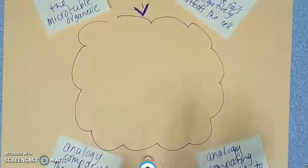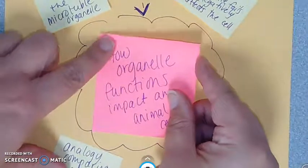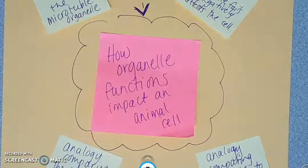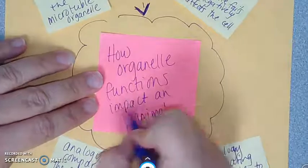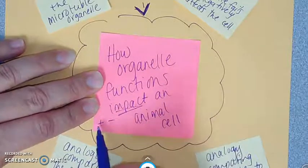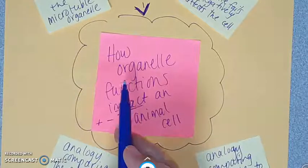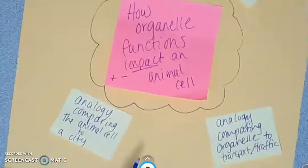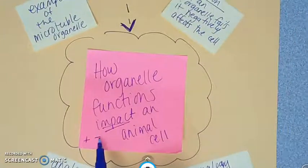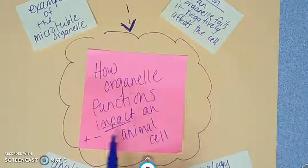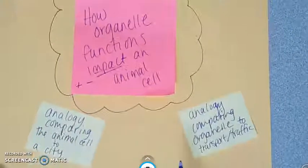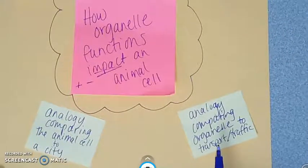I think what it boils down to is right here: how organelle functions impact an animal cell. That word 'impact' has two ways — it can be a positive impact or a negative impact. Positively, if an organelle is functioning and it helps the cell, it's pretty much like the roads in Atlanta help people get around. But it can also negatively impact the animal cell — if it fails, if it's not doing its job, bad things can happen in the animal cell, just like the traffic incident that happened with the bridge collapse.